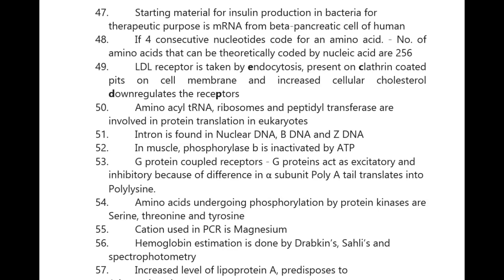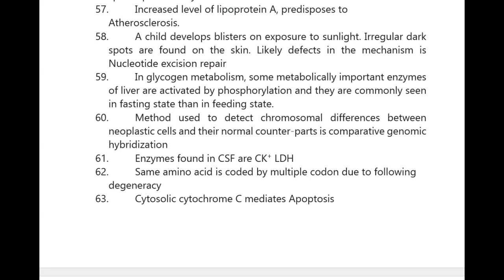A poly-A tail that translates into polylysine amino acids. Amino acids undergoing phosphorylation by protein kinases are serine, threonine, and tyrosine. The cation used in PCR is magnesium. Hemoglobin estimation is done by Drabkin's, Sahli's, and spectrophotometry. Increased level of lipoprotein(a) predisposes to atherosclerosis.